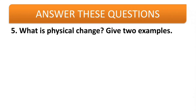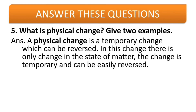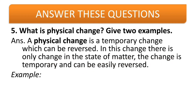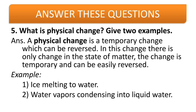Fifth question: what is a physical change? Give two examples. A physical change is a temporary change which can be reversed. In this change, there is only a change in the state of matter; the change is temporary and can easily be reversed. Examples include ice melting to water, or water vapor condensing into liquid water — these are examples where there is merely a change in state which can easily be reversed.